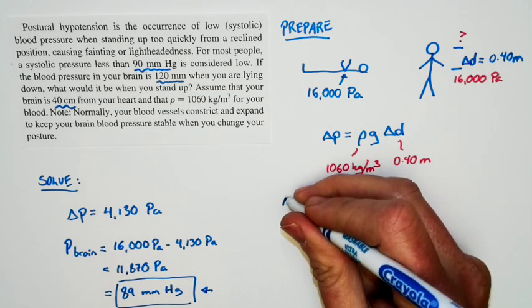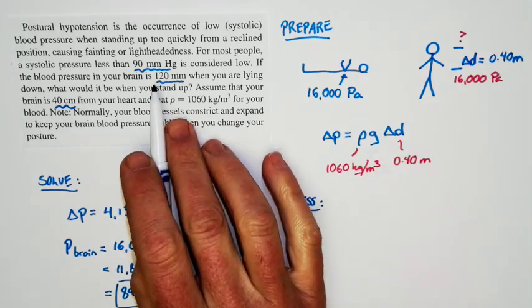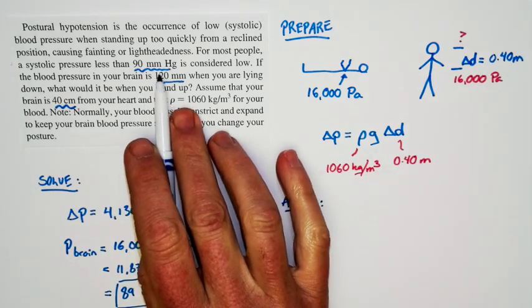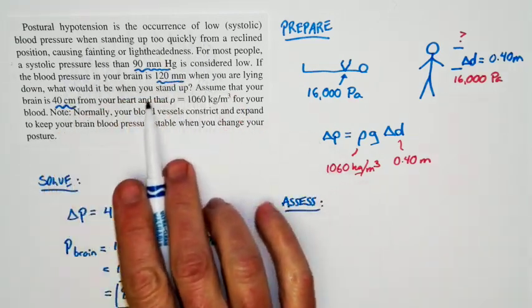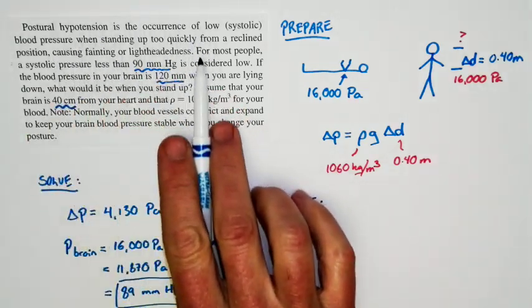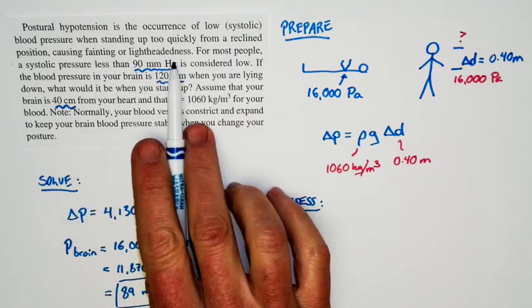And let's do an assessment. We're told that values of systolic pressure less than 90 millimeters of mercury is considered low. We end up with something which is just below that threshold. And we expect that, as we talked about, because we're told that if you're standing up too quickly from a reclined position, you can experience lightheadedness.